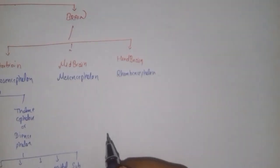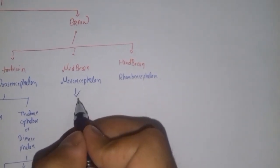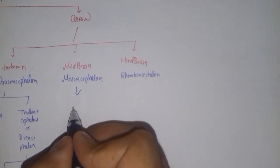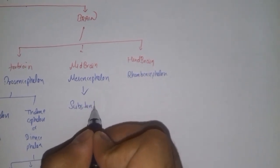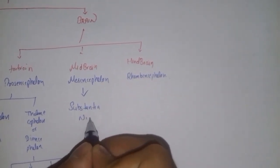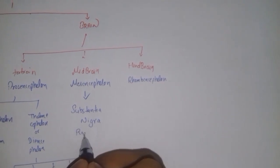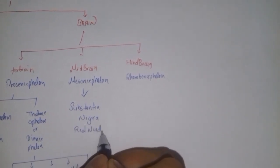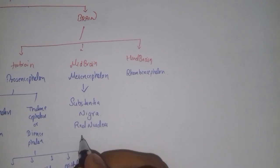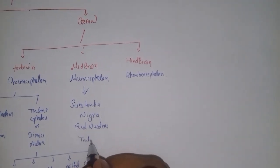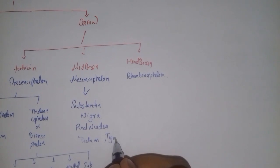Now coming on to the midbrain — the midbrain is the part of the brain which consists of some important structures, just like the substantia nigra, the red nucleus, the tectum, and the tegmentum.